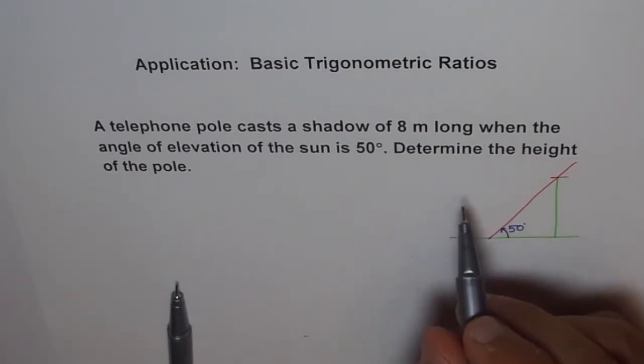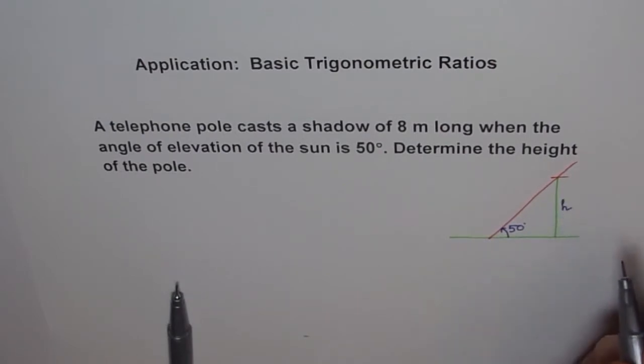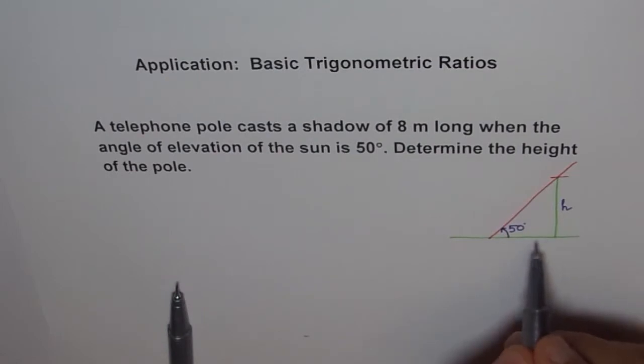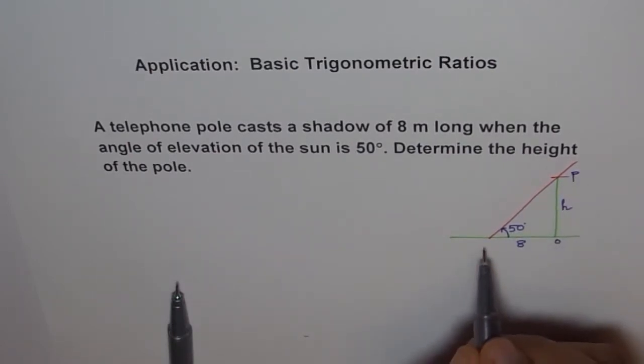We need to determine the height of the pole. Let's define height as H. The shadow is 8 meters long. This is the pole at point P, this is O, and this is the point where the shadow falls, S.